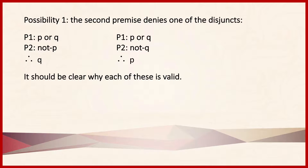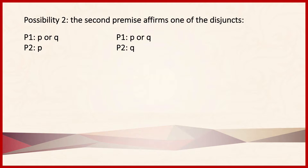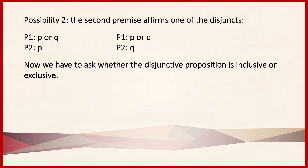Where things get a little tricky is with the second possibility — where the second premise affirms one of the disjuncts. In the argument on the left it's P that's affirmed, whereas in the argument on the right it's Q that's affirmed. Whether something validly follows from each of these depends on whether the disjunctive proposition is inclusive or exclusive.